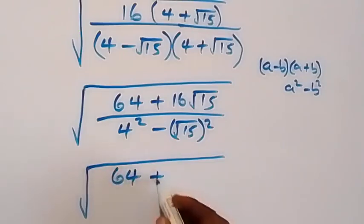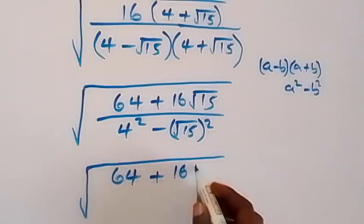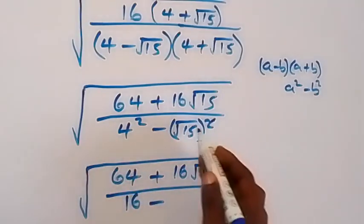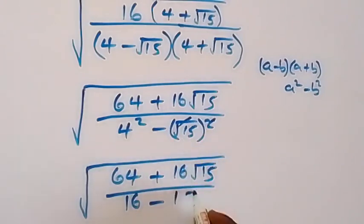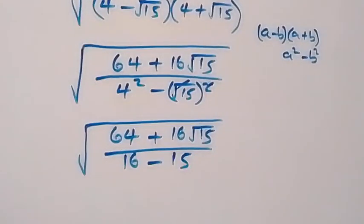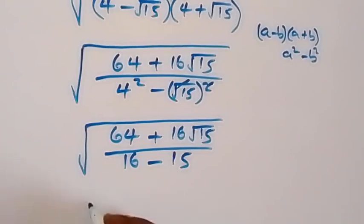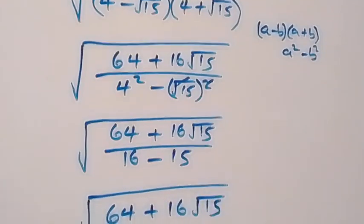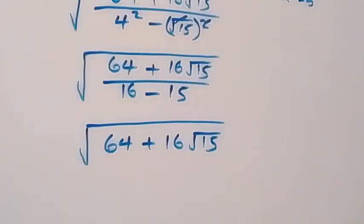From here we have square root of 64 plus 16 root 15, divided by 4 squared — that's 16 — minus root 15 squared, where the square cancels the square root, leaving 15. So 16 minus 15 equals 1, and this simply becomes square root of 64 plus 16 root 15.